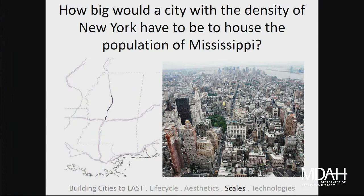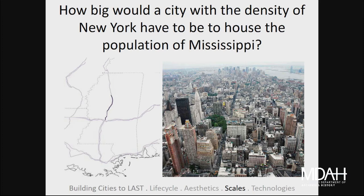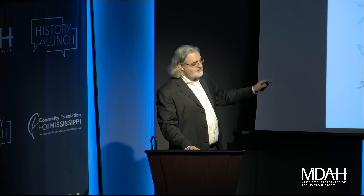A thought exercise from those early classes: if you tried to take Jackson at its current density and house the 37 million people of Tokyo in the patterns in which we build, how big would Jackson have to grow? It would cover about 55% of the state of Mississippi. At the opposite end, if you built at the density of New York, you could house the entire population of the state of Mississippi in a one-mile-wide strip along I-55 between Jackson and Grenada. If you used Tokyo's density you cut about a third off that line; at Mumbai's density, the line gets cut in half.